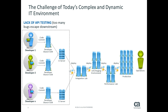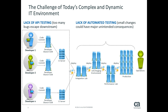Number one: lack of API testing. Too many bugs are escaping downstream, and as they move in that direction they become more difficult and more expensive to fix. How can I start doing more API testing while the code is actually being developed? The second one is lack of automated testing. More and more people are having to make small changes, and if I have to do the same exact manual testing, you start asking: what steps can I omit, what steps can I skip? More and more automated testing needs to be introduced.